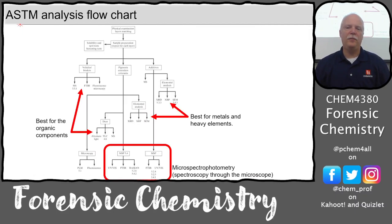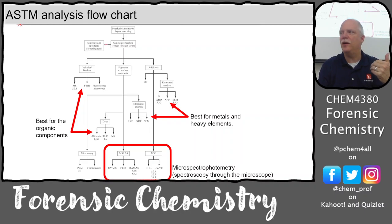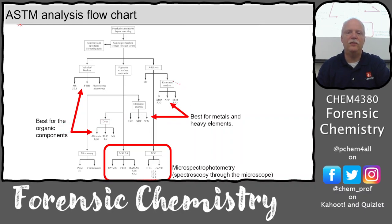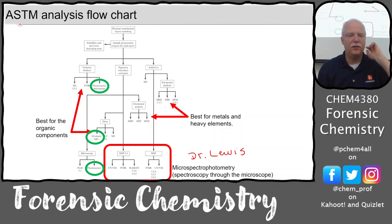This is a flow chart: if you have a paint sample, you can subject it to chemical tests — try to dissolve it, extract various compounds. Or you can use spectroscopy: FTIR, thin layer chromatography, mass spec — those are best for organic components. You can also use a scanning electron microscope to get heavy elements, do elemental analysis. And there's microspectrophotometry, MSP, which is what Dr. Lewis's talk will cover — spectroscopy through the microscope. Today we're talking about fluorescence, spectroscopy, and alternate light sources.